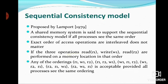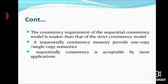The next consistency model is the sequential consistency model, proposed by Lamport in 1979. A shared memory system is said to support sequential consistency if all processes see the same exact order of access operations. The consistency requirement of this model is weaker than that of strict consistency. A sequential consistency memory provides one-copy semantics and is acceptable by most applications.